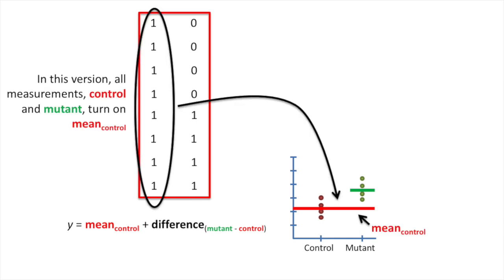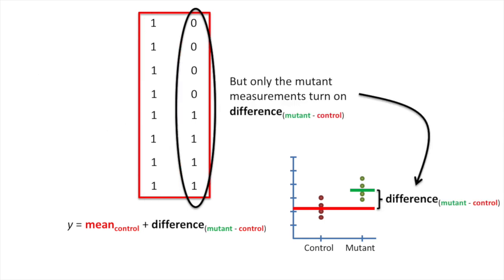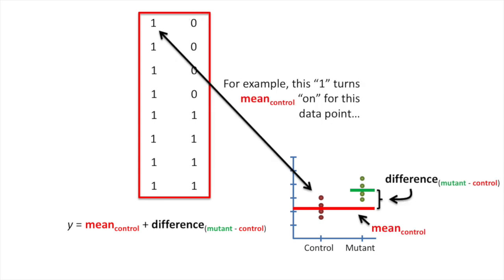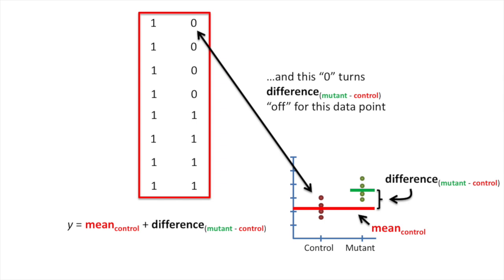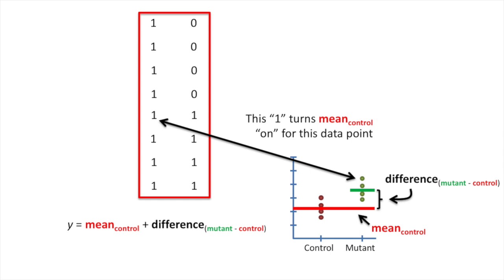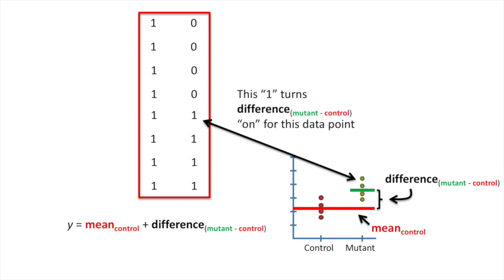In this version, all measurements — both control and mutant — turn on the term for the mean control value. But only the mutant measurements turn on the term for the difference between the mean of the mutant data and the mean of the control data. This term serves as an offset for the mutant data. For a control data point, the first column turns on the mean control term, and the zero in the second column turns off the difference term. For a mutant data point, both terms are turned on.